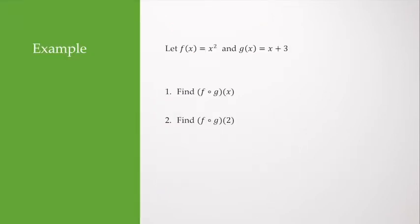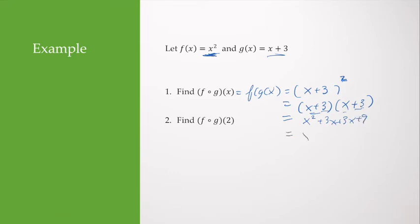So let's let f of x equal x squared and g of x equal x plus 3. If I want to take f composed with g of x, that means I'm going to take f of x, which is x squared, but instead of squaring x, I'm squaring x plus 3. Remember, this is something we would have to foil out. We can't distribute that exponent across addition. So I'm going to get x squared plus 3x plus 3x plus 9.